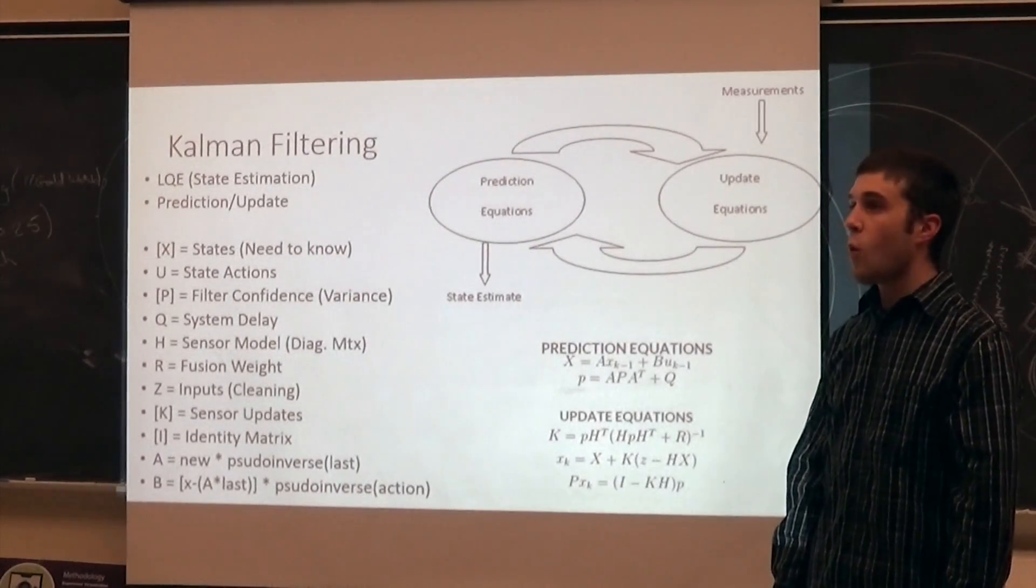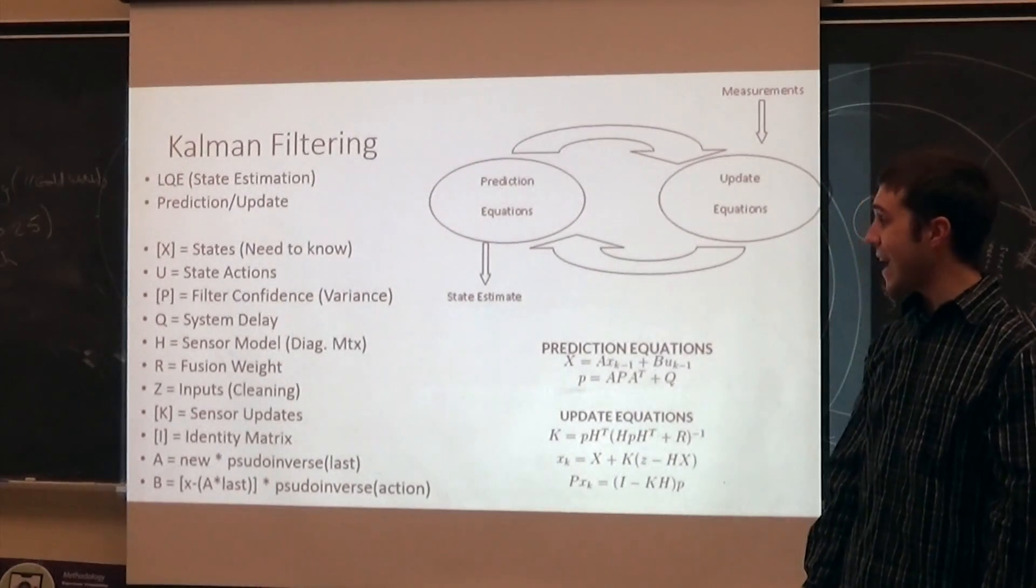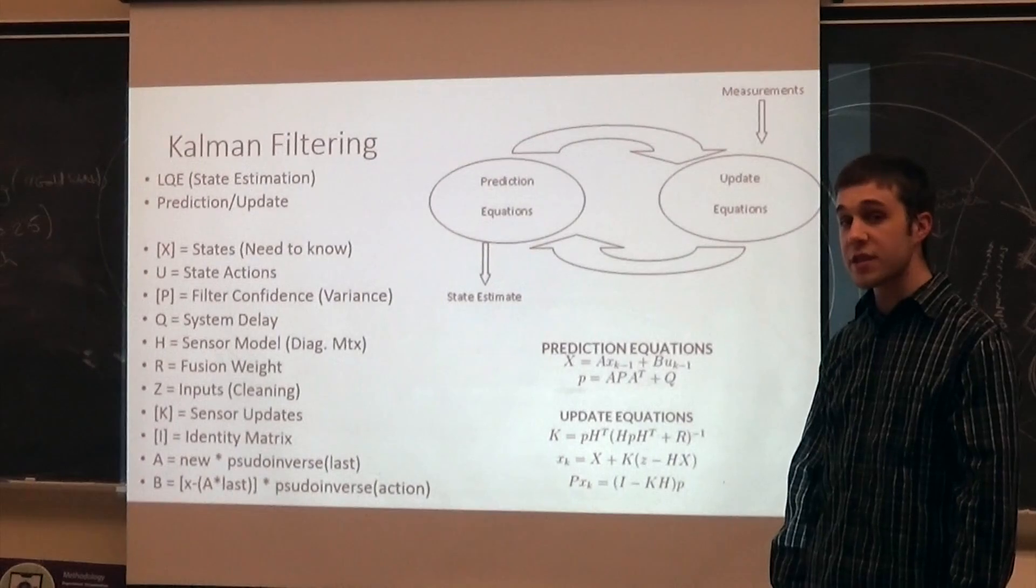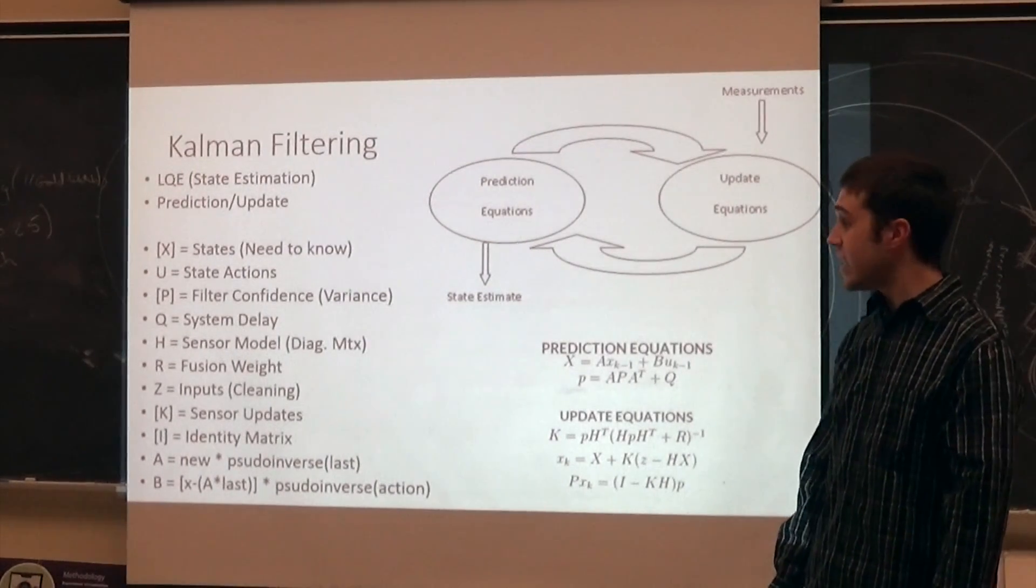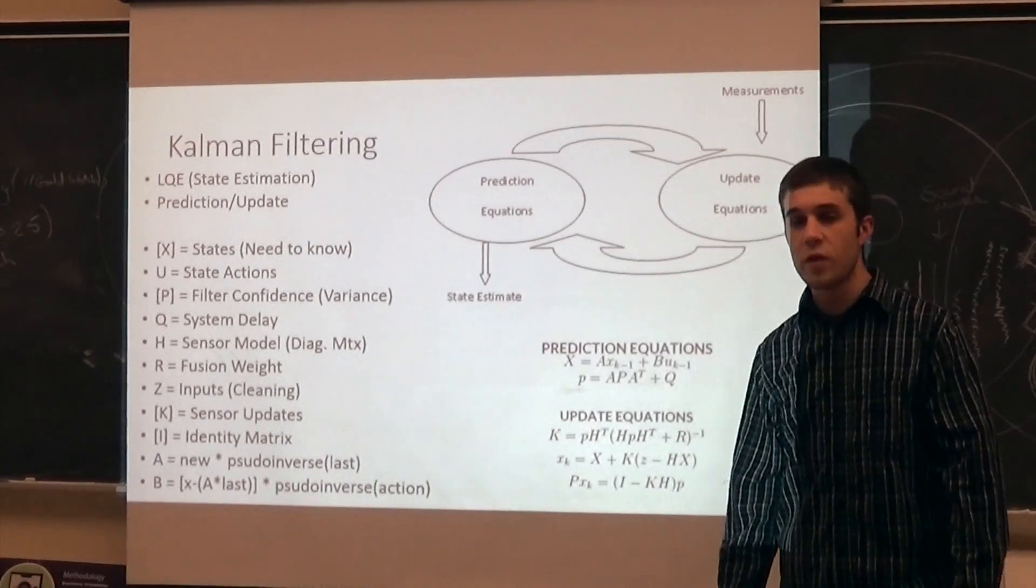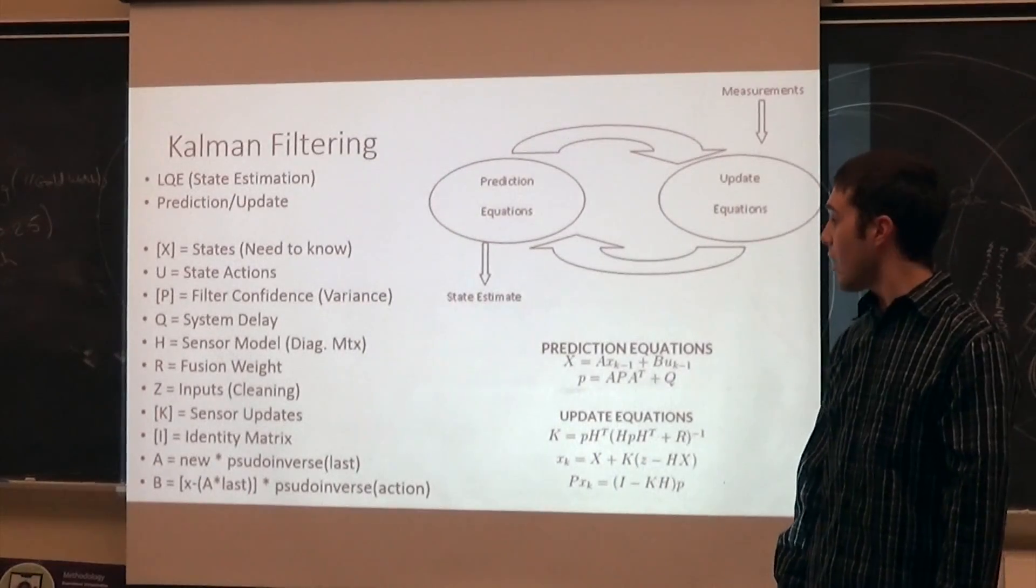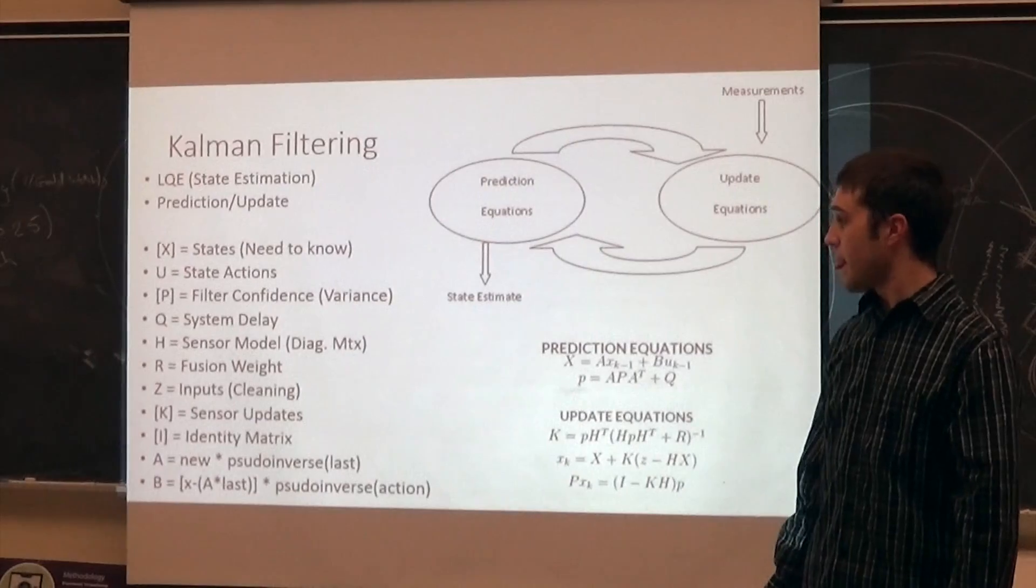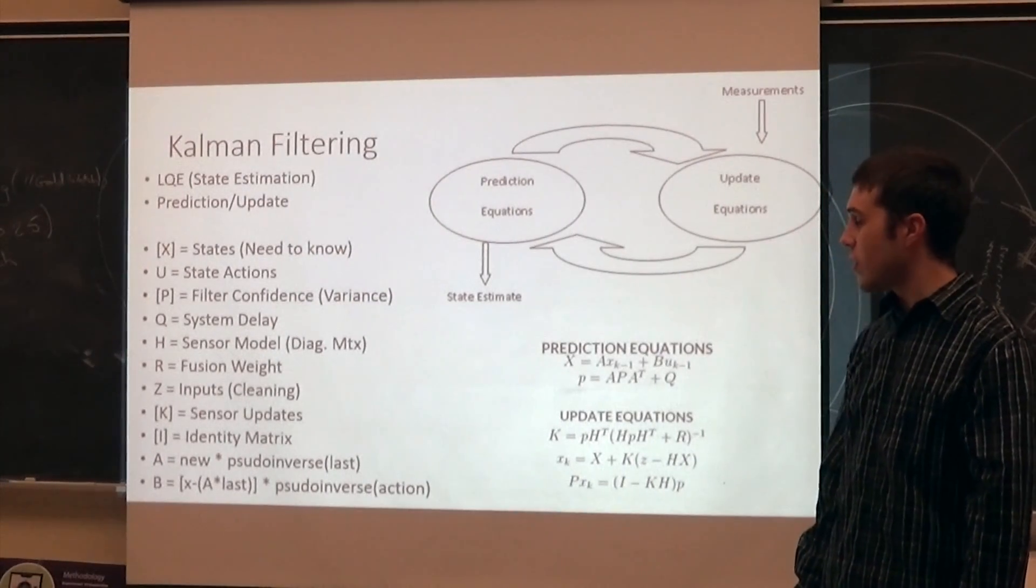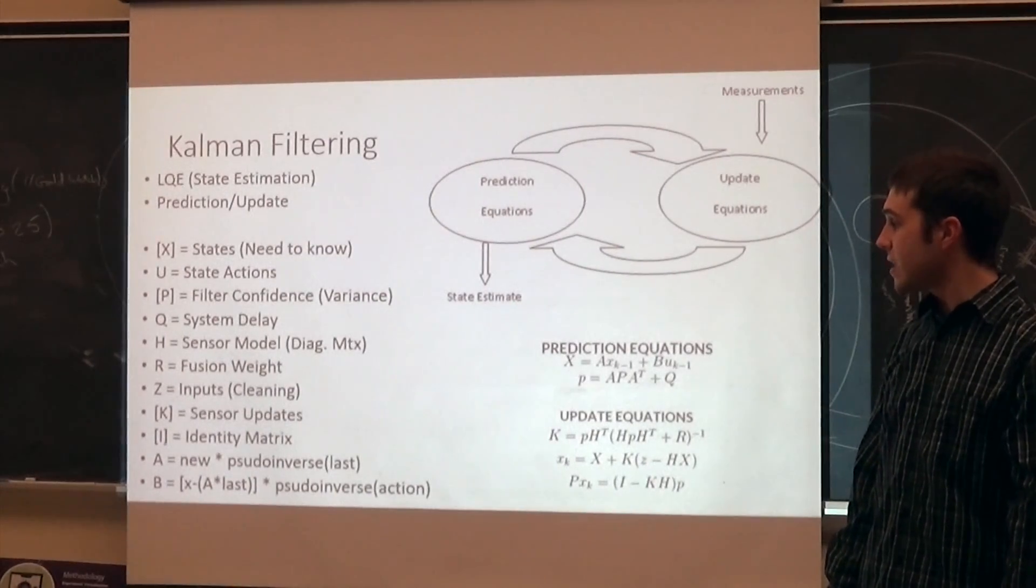Obviously, the Kalman filter is very advanced. H is the sensor model. It's how the sensors are modeled inside of the Kalman filter, and it's a diagonal matrix. The way you populate this matrix is to run it, see what you have, and then adjust accordingly. The R value is the fusion weight. When you're fusing more than one sensor together, in our case, we're fusing the X and the Y for the accelerometer, and the X in the gyroscope. This would be a three by three matrix diagonal once again. And then the Z are the inputs. Z is used to take the noise out of the inputs, which is very, very useful in our application, especially with the accelerometer.